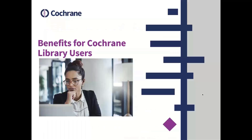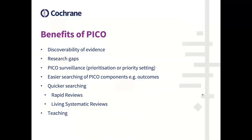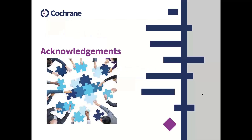So what are the benefits for our Cochrane Library users? You can discover evidence — can you find your review and the RCTs that meet your research criteria? PICO can be useful to discover research gaps: what topics have not yet been covered and what needs to be updated. It supports surveillance of evidence for priority setting, and makes searching easier, especially for outcomes. Having reviews and RCTs described using PICO could also be useful in the classroom to assist teachers in explaining PICO. Finally, I'd like to acknowledge all the teams involved in this work. Thank you.